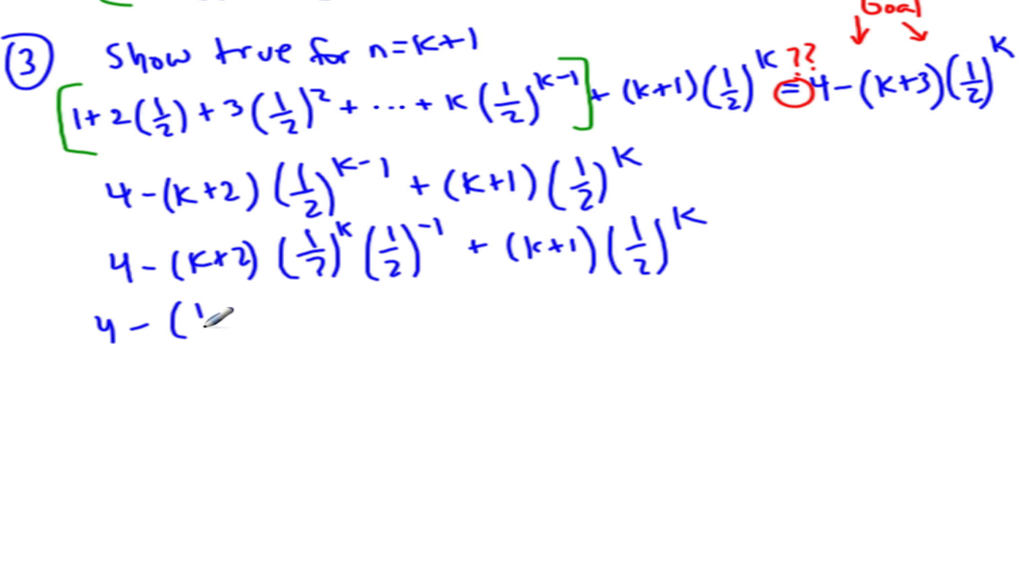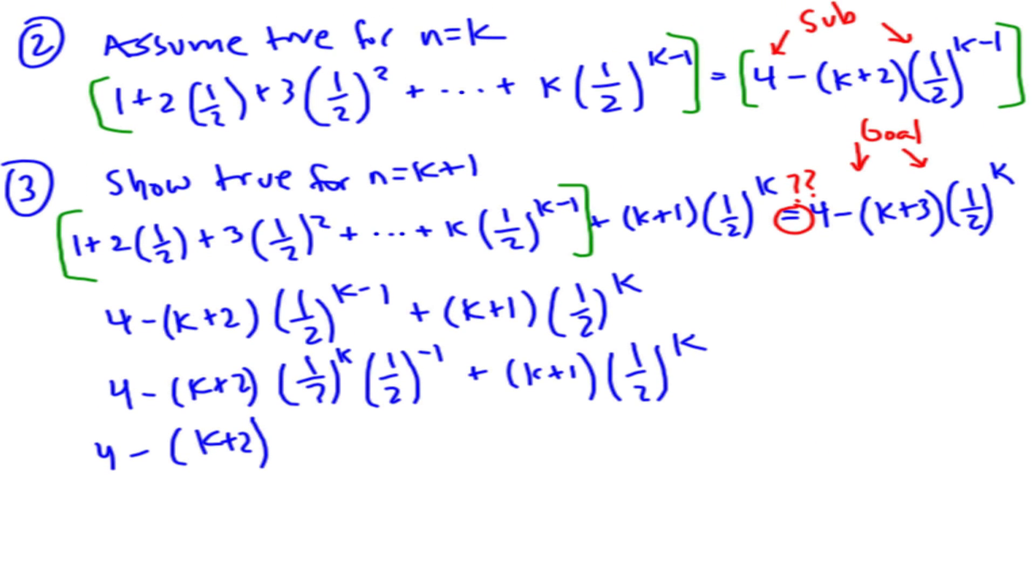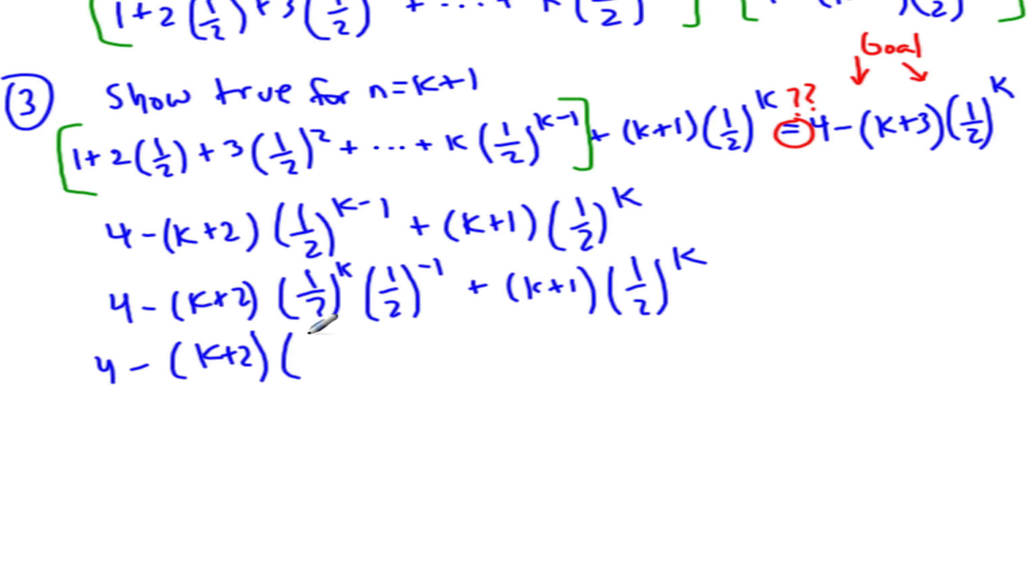Okay, 4 minus k plus 2 times 1 half to the k. And then this is equal to 2. If I give that negative 1 power down to the 2 and to the 1, I'll get the reciprocal, so this is just 2. Plus k plus 1, 1 half to the k.